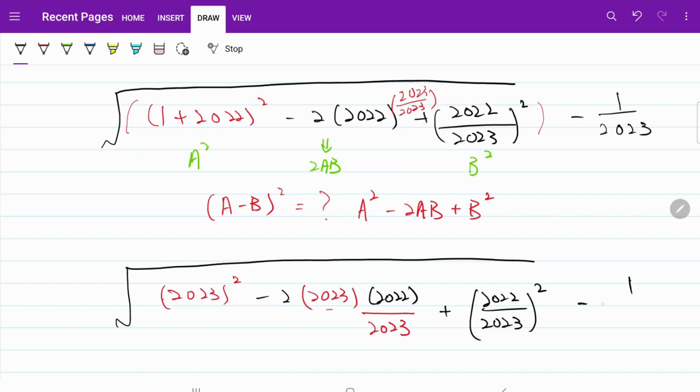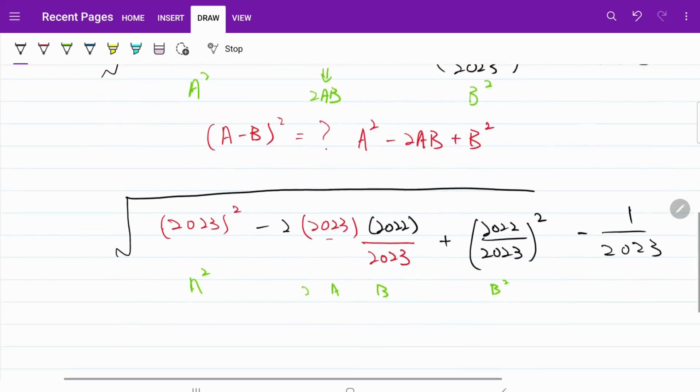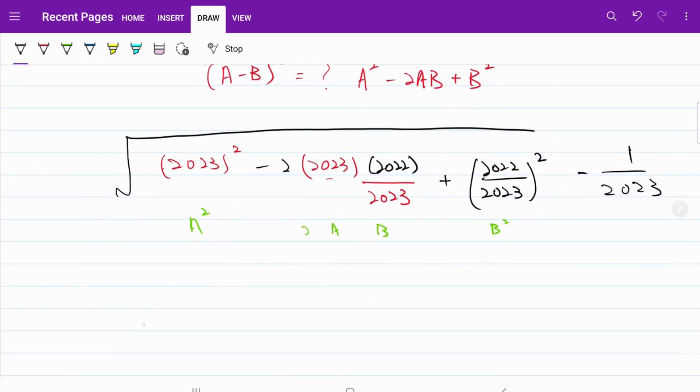And just like that, we have our A squared, our 2AB, and our B squared. In other words, we have been successful in our mission to convert this into a perfect square. So let me go ahead and write this out.